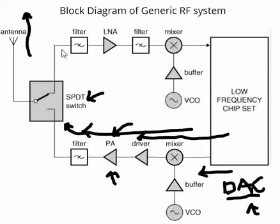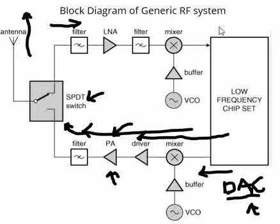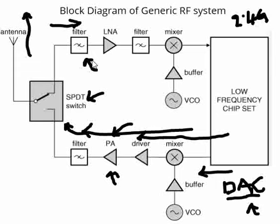Now if we look at the receive section, the first section comprises a filter where this filter filters out all unnecessary signals and restricts only the required signals to the system. For example, if we want to receive a signal of 2.4 GHz, anything on either side of that frequency will be filtered using this filter.